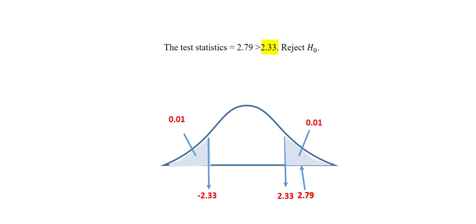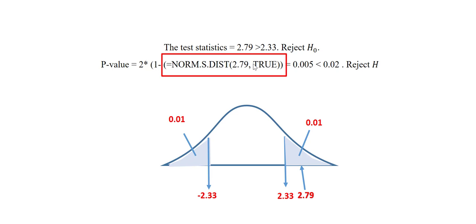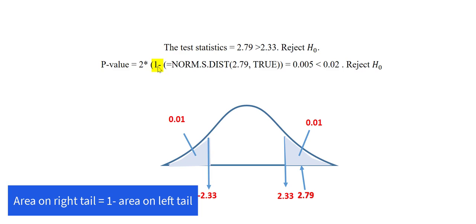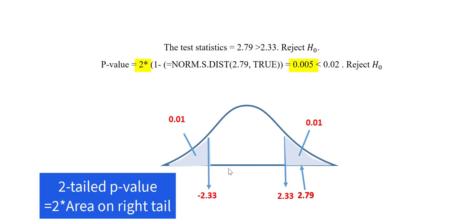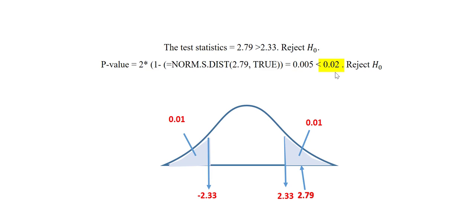We can also find the p-value by typing this formula into any cell in Excel. Note that in here we have the test statistic. Since this is a right-tail test, we have to subtract this value we get from 1 and then multiply the result by 2. So our p-value will be 0.005, which is also less than alpha, so we make the same decision and reject the null hypothesis.